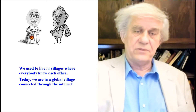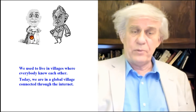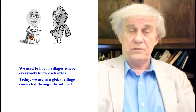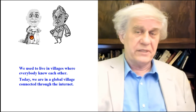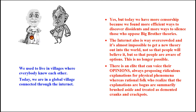Al-Khalili says to Dawkins: we used to live in a village where everybody knew each other, and today we're in a global village connected through the internet. That's somewhat positive — you have a chance through YouTube to communicate with the entire world. But there are problems: today we have more censorship because we've found more efficient ways to discover dissidents, and it's almost impossible to get a new theory out into the world.